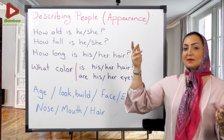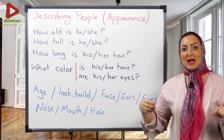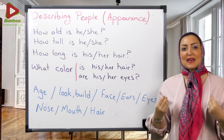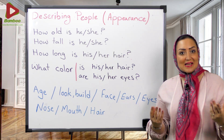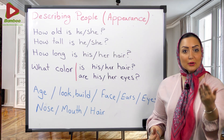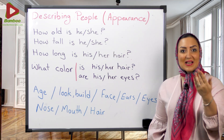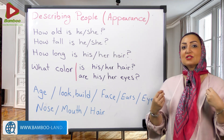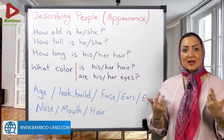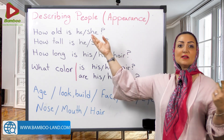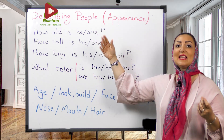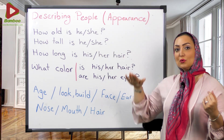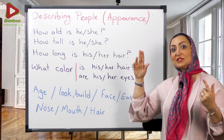اولین سوالی که به ذهنمون میرسه اینجا وقتی میگیم how they look — فعل look — اگر حرف اضافه بعدش نباشه یعنی به نظر رسیدن. مثلاً دوستتونو میبینید، یه ذره خسته است، میگید: you look tired today — امروز خسته به نظر میرسی. پس این look که اینجا به کار میره — how they look — یعنی چطور به نظر میرسن. اولین سوال اینه که سن طرف رو بپرسیم: How old is she? How old is he? The next question: How tall is he? How short is he? How tall is she? How short is she?